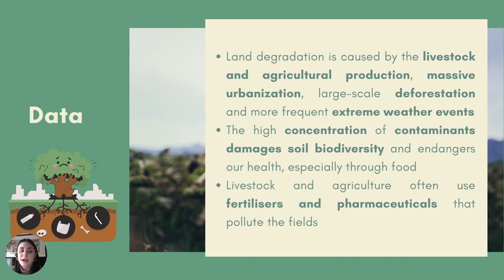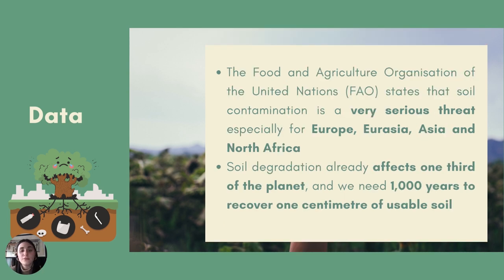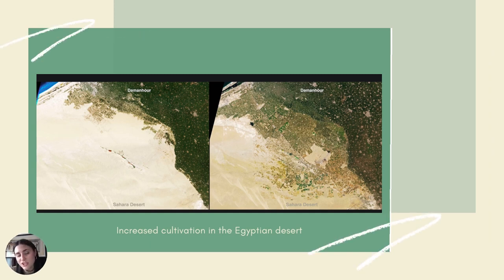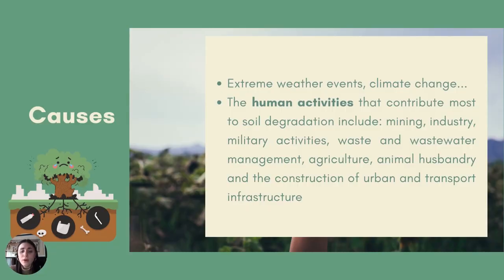In particular, livestock and agriculture often use fertilizers and pharmaceuticals that pollute the fields. The Food and Agriculture Organization of the United Nations states that soil contamination is a serious threat, especially for Europe, Eurasia, Asia, and North Africa. Furthermore, the organization states that soil degradation already affects one-third of the planet, and its recovery will be so slow that it will take 1,000 years to recover one centimeter of usable soil. Here we can see an increase in cultivation in the Egyptian desert.